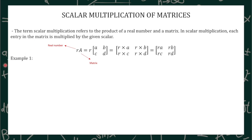Let's take a look at example number 1. Let A equal [1, 4, 2, 5, 3, 6] and B equal [2, 6, -4, 9, 6, 1]. Find 2A minus B. In order to read the elements in the given matrix, it is important to read it row by row, because that will be very helpful in our next topic, which is the transposition and vector multiplication of matrices.